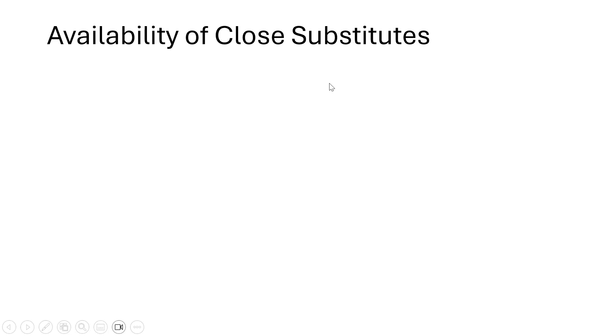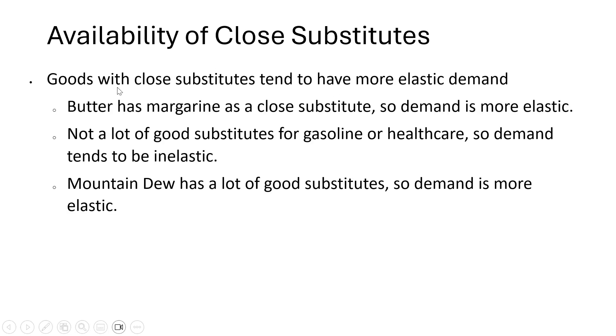The first determinant of price elasticity of demand, and probably the most important, is the availability of close substitutes. Goods with close substitutes tend to have more elastic demand. Butter has margarine as a close substitute, so demand for butter is likely to be more elastic. There are not a lot of good substitutes for gasoline or health care, so demand there tends to be more inelastic.